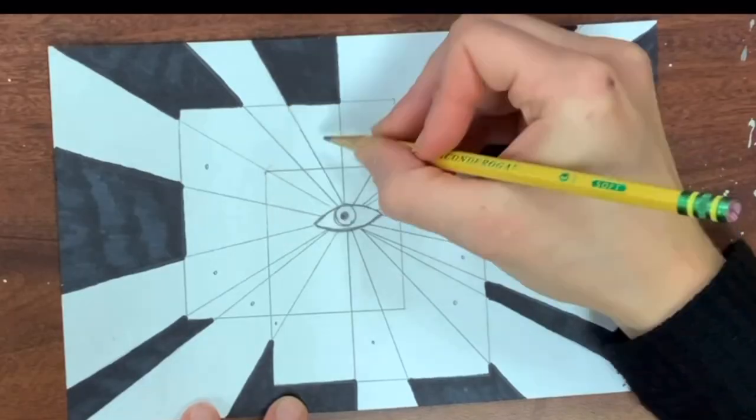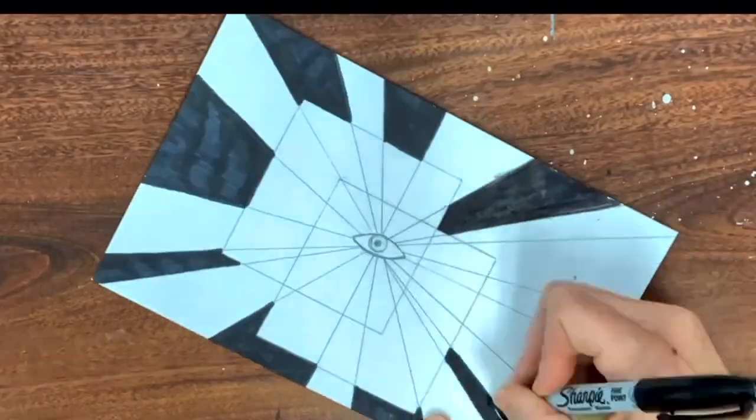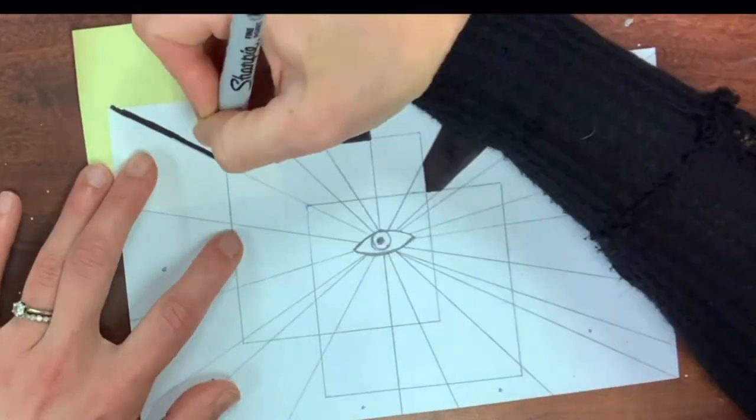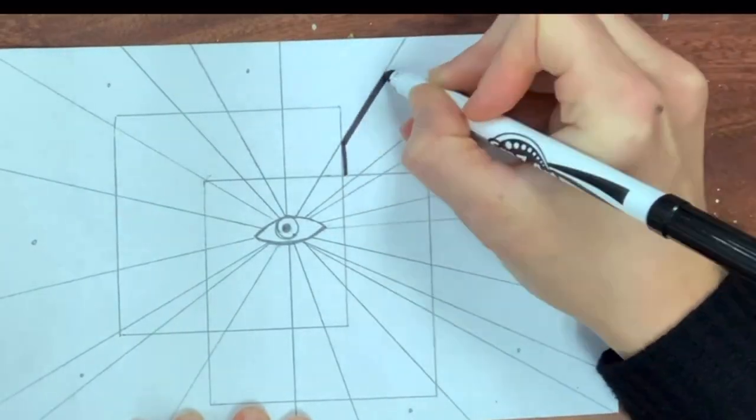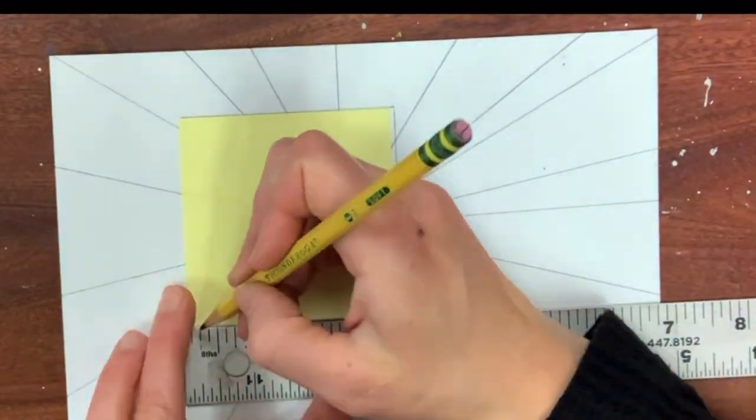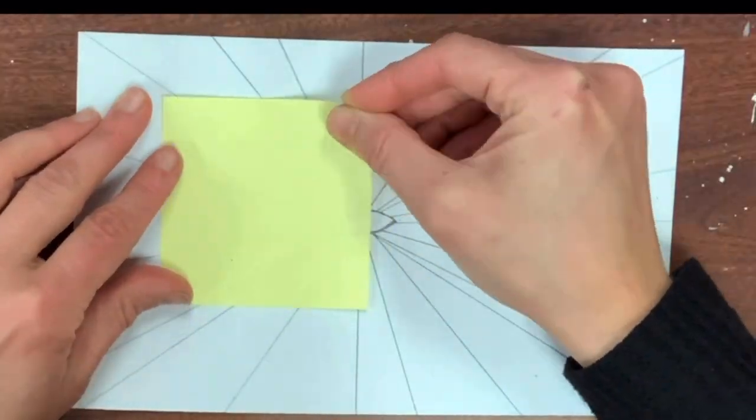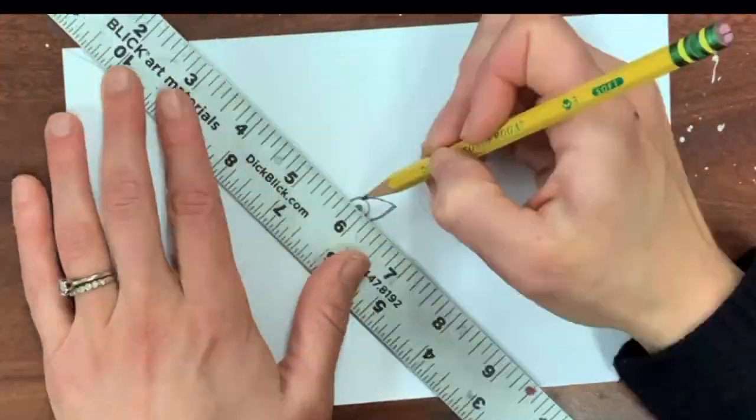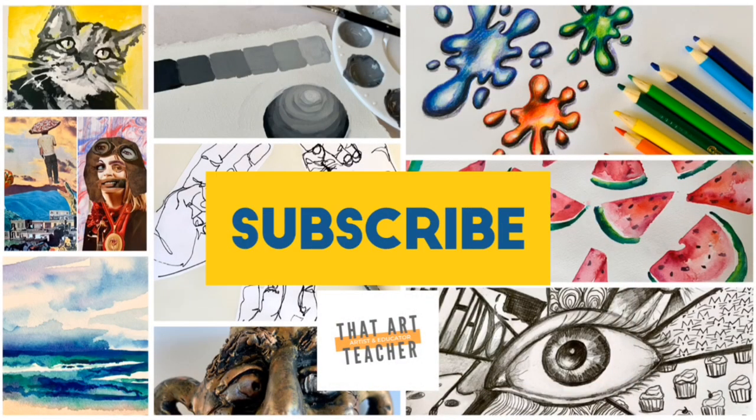I put an eye in the middle of mine because I'm extra, but you could simply make it a circle. I will walk you through how to do this with a pencil and ruler. You need something to trace to create your squares, or you can simply use the ruler. I'm going to be using a marker, but use whatever material you prefer, even a pencil. If you love learning about art and want to support my channel, hit that subscribe button.